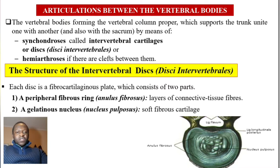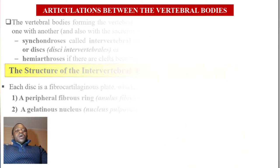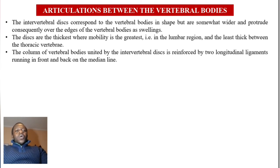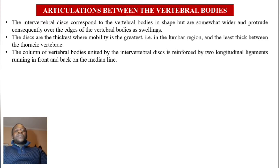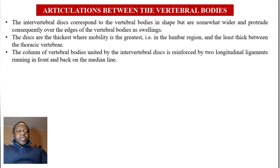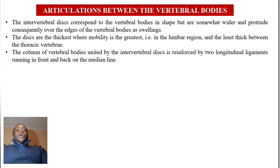The nucleus pulposus is actually a remnant of the notochord in vertebra. The intervertebral discs correspond to the vertebral bodies in shape but are somewhat wider and protrude consequently over the edges of the vertebral bodies as swellings. The discs are thickest where mobility is greatest — that is in the lumbar region — and less thick between the thoracic vertebrae, because there is less mobility there.